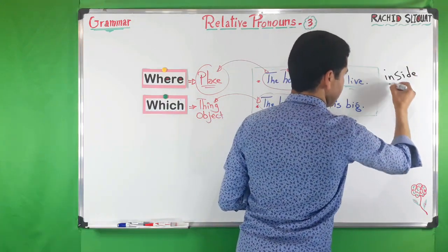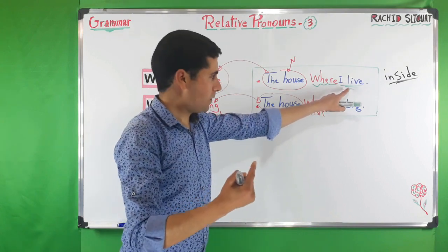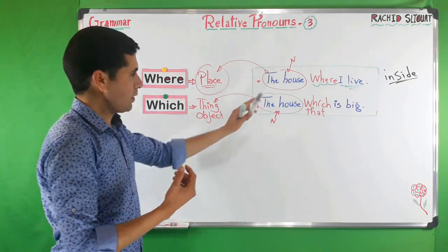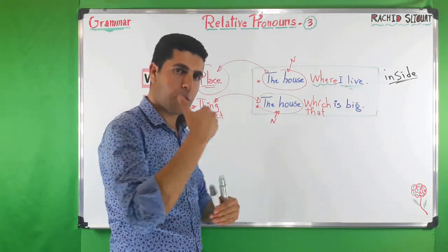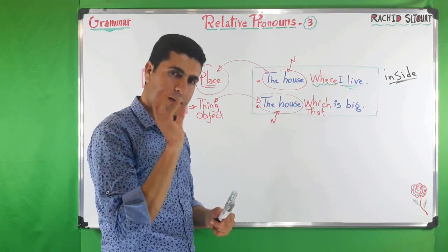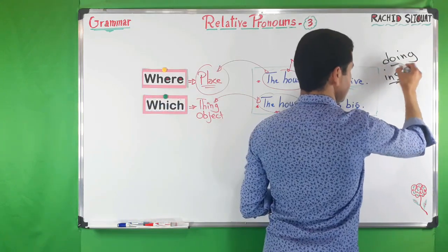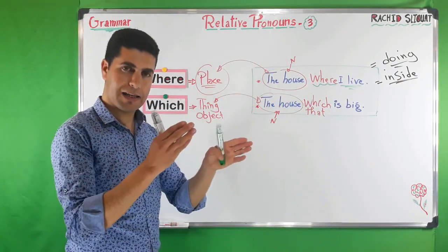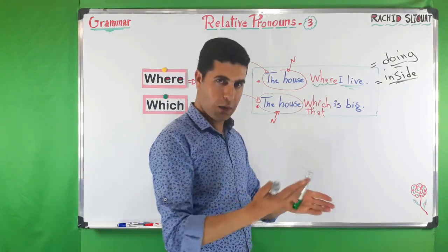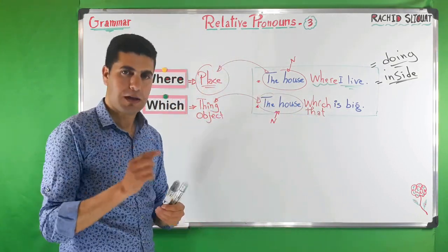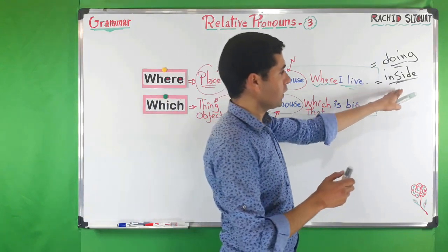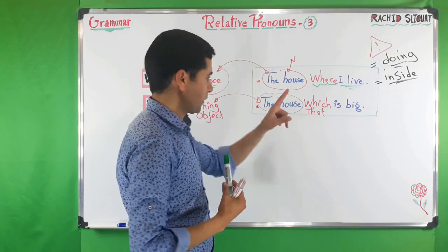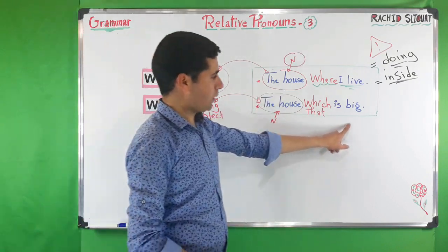Where is used when we live, work, or play inside a place — it's about doing something. So remember these keywords: doing or inside. 'The house where I live' — we live inside the house, we do something in the house.